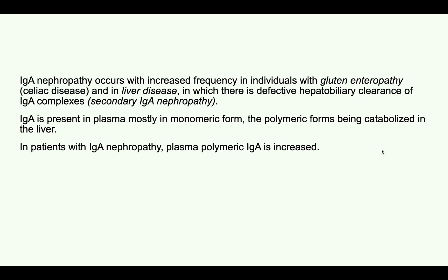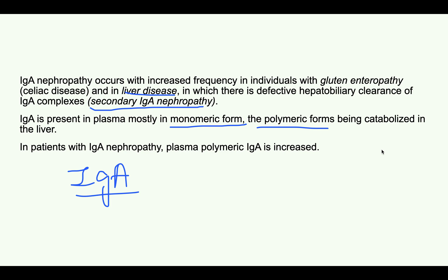IgA nephropathy is also increased in patients having celiac disease, that is gluten enteropathy — again a problem in immune regulation. Also in liver disease: patients with liver disease can sometimes have IgA nephropathy because the body is not able to clear the IgA complexes. This is a type of secondary IgA nephropathy. The IgA present in the plasma is mostly in monomeric form; however, polymeric forms are catabolized in the liver. When there is liver disease, these polymeric forms will not be catabolized, and therefore in these patients you can see increased plasma polymeric IgA.